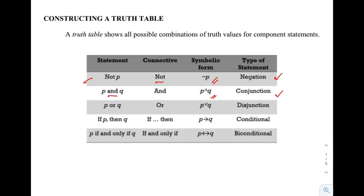For the statement 'P or Q', the connective is 'or', and we will use the symbol vee (∨). This type of statement is called disjunction.